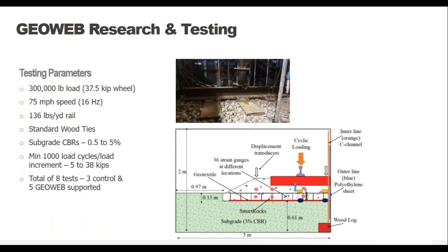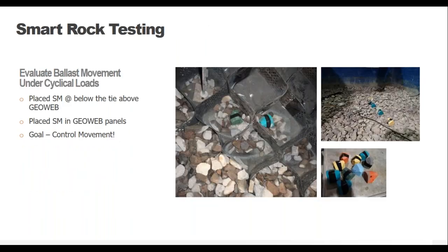The testing consisted of a 300 kip car, equivalent to a 37.5 kip wheel load, at 75 miles per hour speed, with 136-pound rail and wood ties. We varied the subgrade from 0.5 to 5% CBR. We did a total of eight tests — three control sections and five Geo support tests — with a minimum of 1,000 passes. Smart rocks were added to the ballast layer halfway between the bottom of the tie and the Geo panels, and along the inside of the Geo panels. This was an eight-inch ballast layer, so smart rocks were placed four inches below the tie and four inches above the Geo layer.